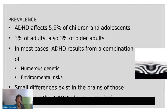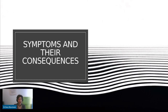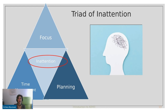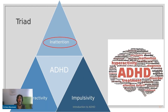To go through the symptoms and their consequences: there is a triad of three types of symptoms — inattention, hyperactivity, and impulsivity. That's what we see in ADHD. Starting with inattention.